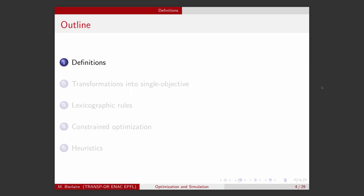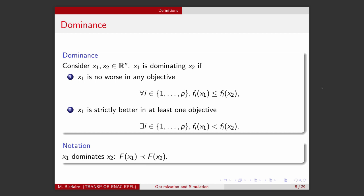Let's start by some definitions. A key concept in the context of multi-objective optimization is the concept of dominance. So, consider two solutions, X1 and X2, belonging to R^n. We will say that X1 is dominating X2 if two things happen. One, X1 is no worse in any of the objectives. So, the value of the objective function for X1 is less or equal to the value of the objective function for X2 for all the objective functions. And second, there must be at least one objective for which X1 is strictly better. We will use the following notation, so this means that X1 dominates X2.